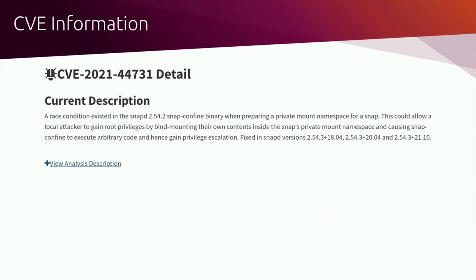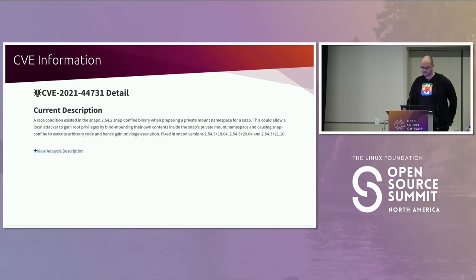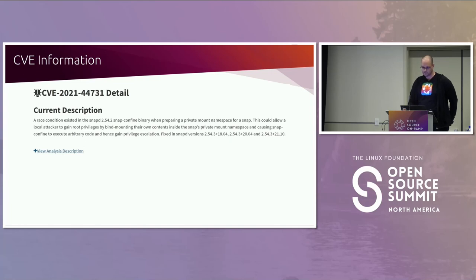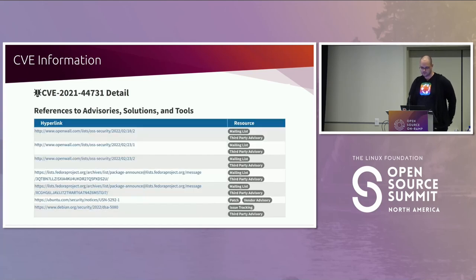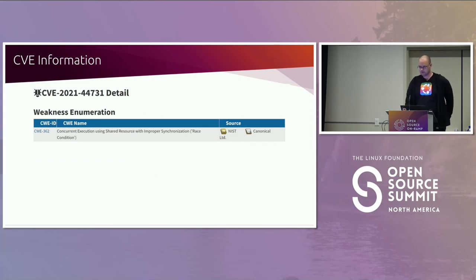CVEs contain a lot of metadata. If there's a vulnerability in your software, it's best if you, the upstream project, help write this metadata. Key pieces include: the CVE description, written in plain language, which explains the attack, the impact, what software is affected, and any other relevant attack vectors. Also included are the severity and characteristics calculated by CVSS, references such as bug reports and analysis reports, and the CWE identifier.